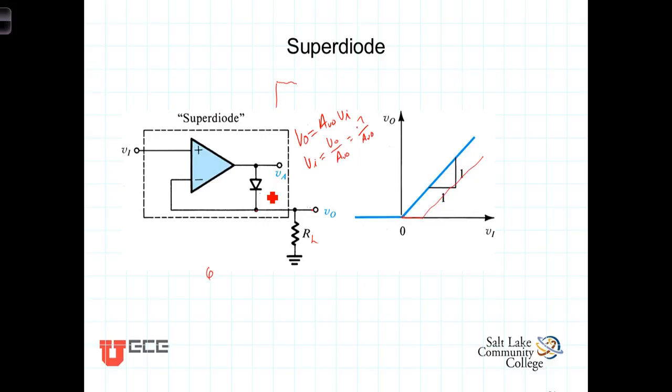So this superdiode works for signals that we want to rectify that have relatively small input voltages, including amplitudes significantly less than seven-tenths of a volt. The voltage to get the diode to conduct comes from the operational amplifier, amplifying the input, a very small input, by the large open loop gain of the amplifier.